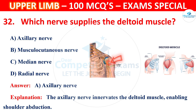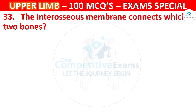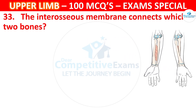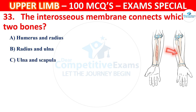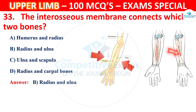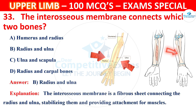Question number 33: The interosseous membrane connects which two bones? Options: humerus and radius, radius and ulna, ulna and scapula, or radius and carpal bones. The correct answer is B, radius and ulna. The interosseous membrane is a fibrous sheet connecting the radius and ulna, stabilizing them and providing attachment for muscles.